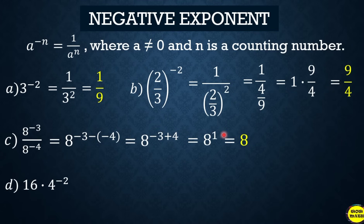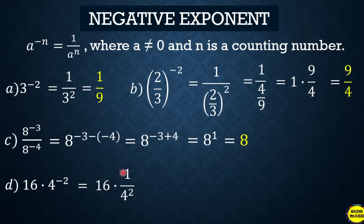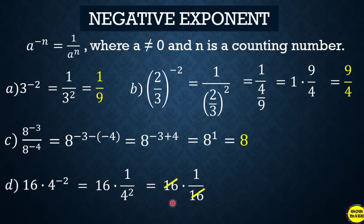Another example: 16 times 4 raised to negative 2. For 4 raised to negative 2, take the reciprocal: 16 times 1 over 4 squared. Since 4 squared is 16, we have 16 times 1 over 16. These cancel out, so the answer is 1.